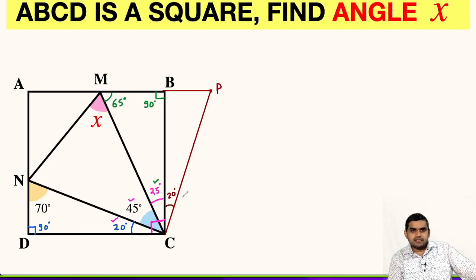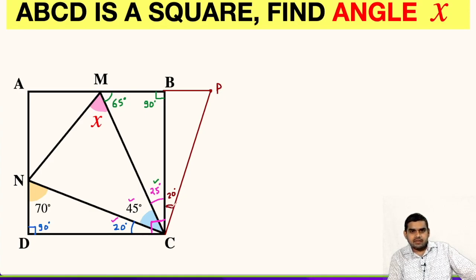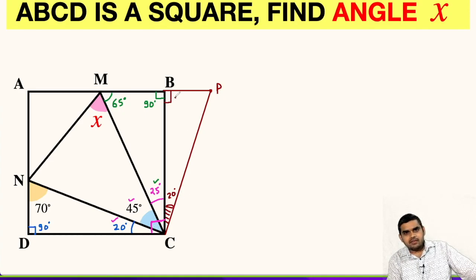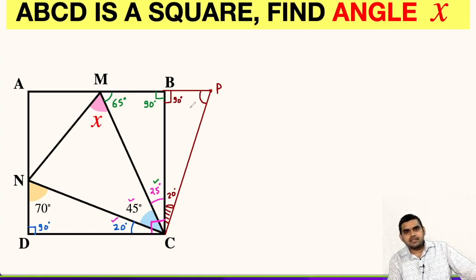In triangle BCP, by construction we have taken this angle as 20 degrees. This angle will be 90 degrees. So the third angle will be 180 minus 90 minus 20, that is 70 degrees.